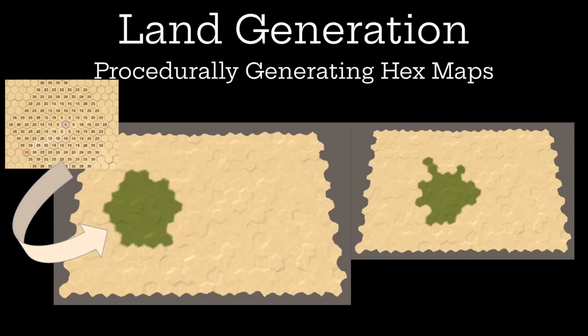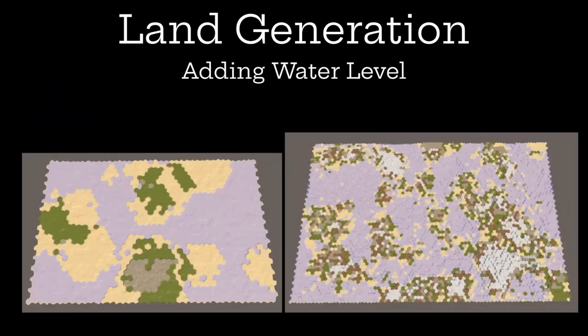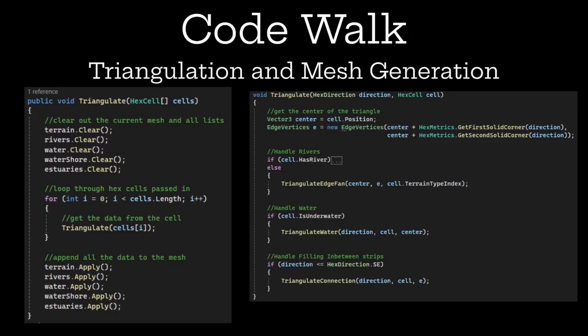Finally, we can use this to actually generate land. We can procedurally generate these hex maps using a sort of search. As you can see with the blob on the left, it starts as a perfect search — you search cells and every time you come into one, color it green. But we can also add a little jitter, a little randomness to the search heuristic, and that gets you something on the right that looks a little more naturalistic. Then we can add a water level by looping through every cell — everything above it is above water and everything below it is beneath water.